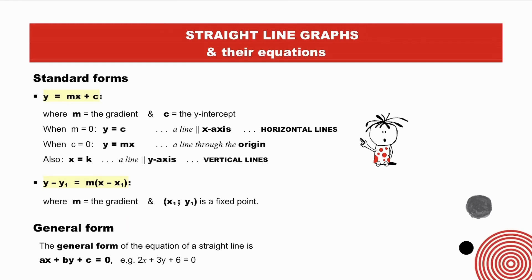The general form of the equation of a straight line is ax plus by plus c equal to 0 — for example, 2x plus 3y plus 6 equal to 0. Here, the dual-intercept method works well; there is no need to convert this equation into standard form. Simply substitute x equal to 0 to find the y-intercept, and then y equal to 0 to find the x-intercept.